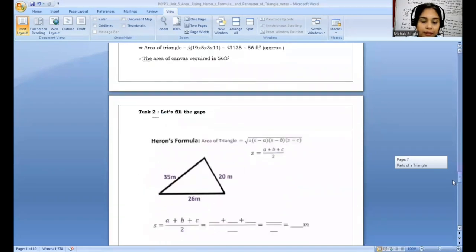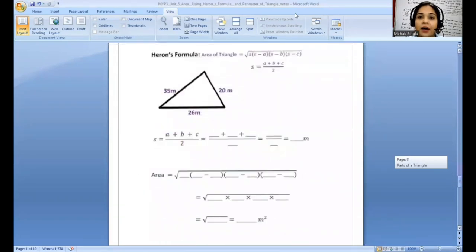Let's quickly jump towards the task which we have for you. Let's see what your task is about. Great, so you have to fill the gaps here. 35, 26, and 20 are the sides already given. This is a formula which has been shown to you and this is the stuff which you are supposed to fill. What is your a? Your side a should be 35. You can take any number as side a, b, c, correct.